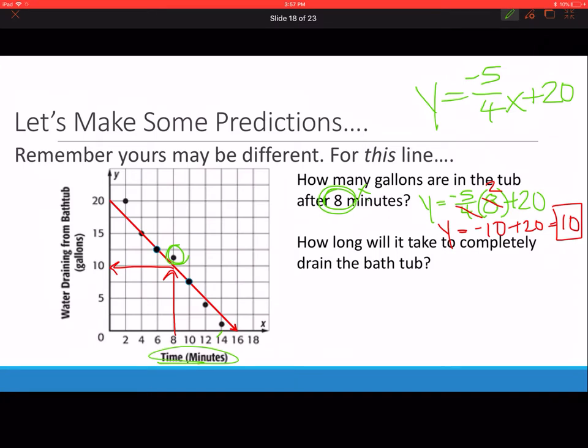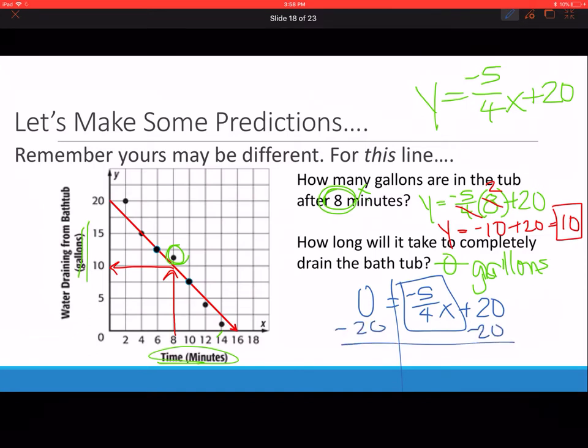How long will it take to completely drain the bathtub? If we want it to be completely drained, that means there will be 0 gallons. 0 gallons is our y-axis, so we're going to substitute 0 for the y. 0 equals negative 5 fourths x plus 20. We isolate the variable, opposite operation, bring down the variable term. Negative 20 is negative 5 fourths x.